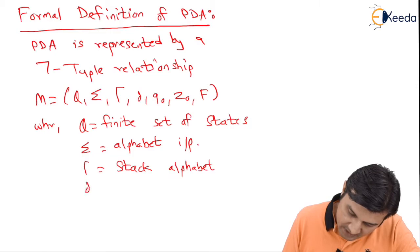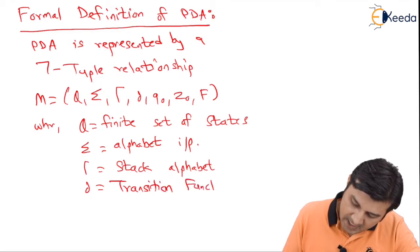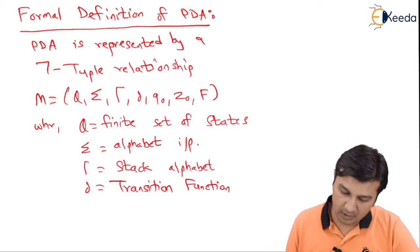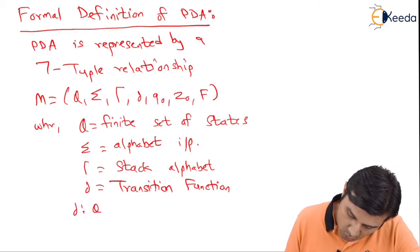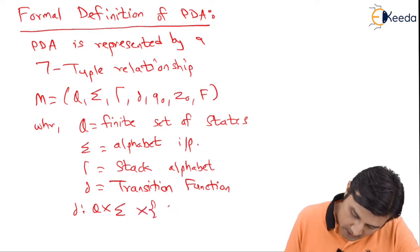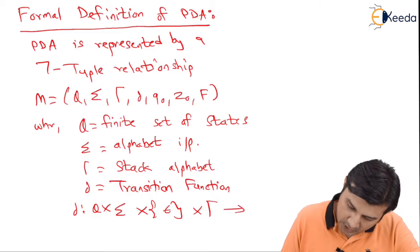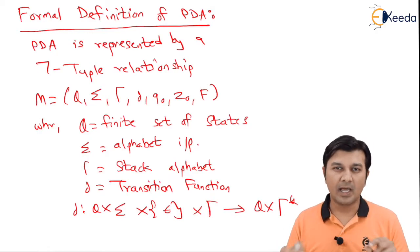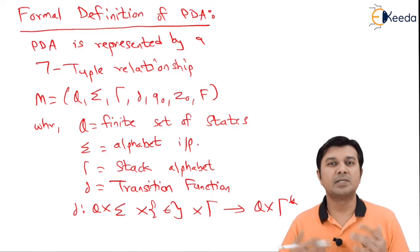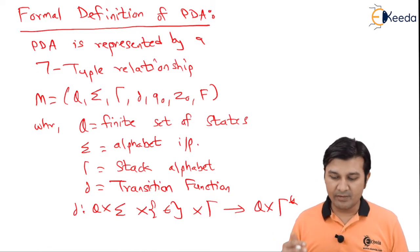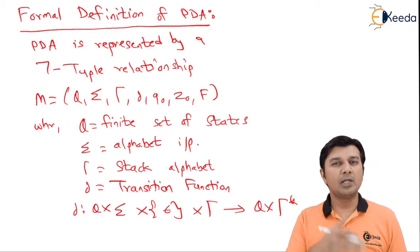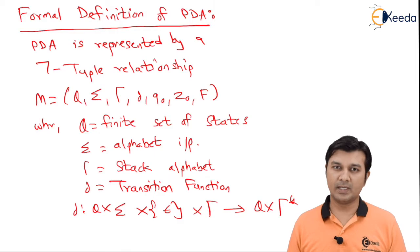Next we have the transition function δ. Like in FSM, FA, DFA, and NFA, δ was the heart of the machine — here also it is going to be the heart of the machine. This δ is represented as Q × Σ × {ε} × Γ going to give Q × Γ*. Right now you may not fully understand this line, but without understanding it you can still follow the entire PDA chapter, which I will explain once we do a problem on it.